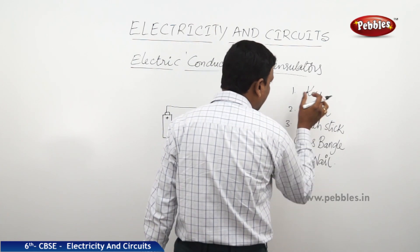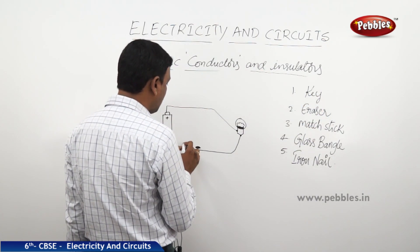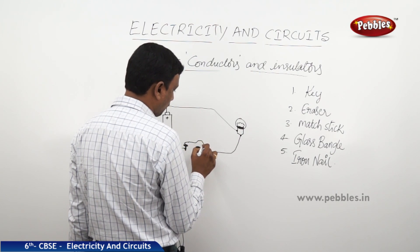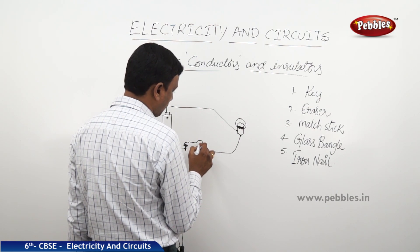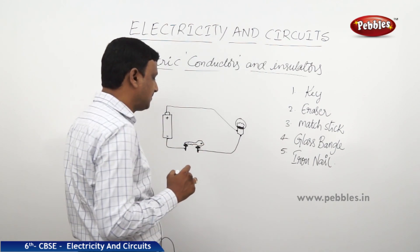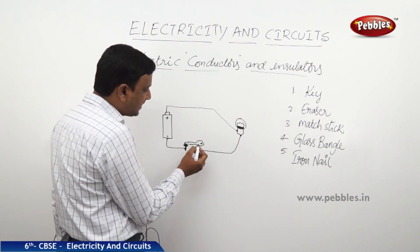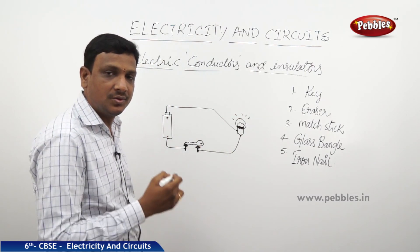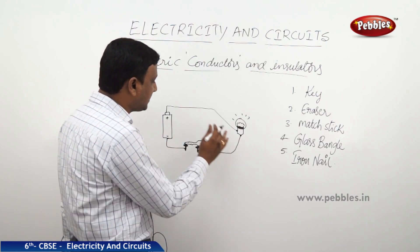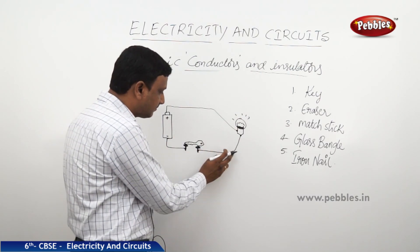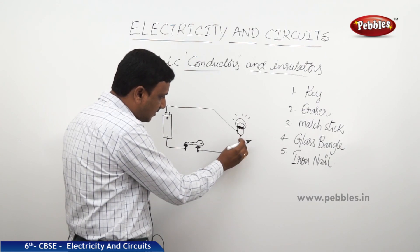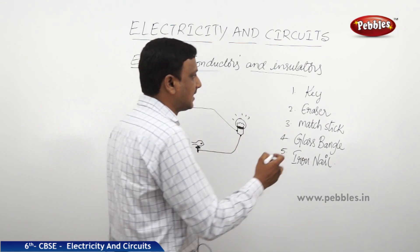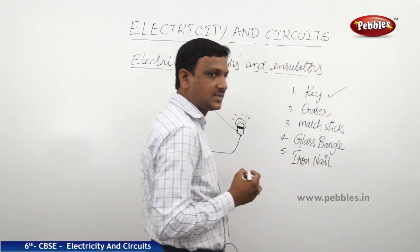Now I took the key and kept it here. The key is touching both the pins. Now the bulb glows — the circuit is complete. The electricity flows through the key. The charge coming from here through this wire is flowing through the key. So the key is a conductor; it is conducting the electricity.